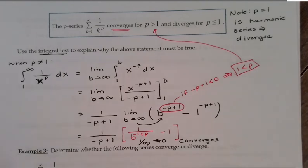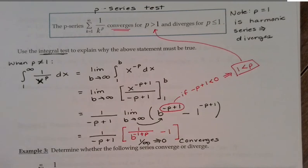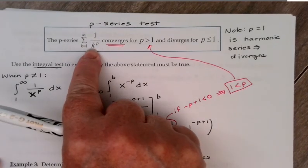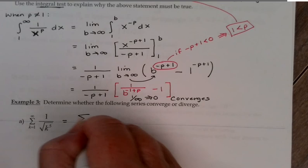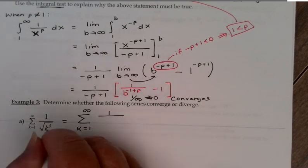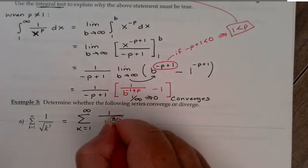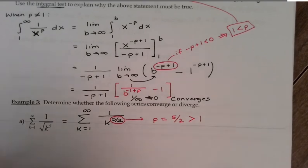Let's put this theorem into practice — I'll call this the p-series test. For the first example, I want to determine whether the series converges or diverges. The first thing to do is rewrite it in p-series form, as 1 over k to a power. The square root of k to the fifth is k to the 5/2, so p equals 5/2. That is definitely greater than 1, so this converges by the p-series test.